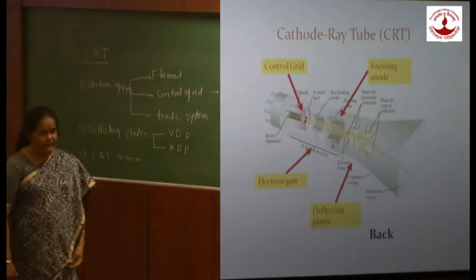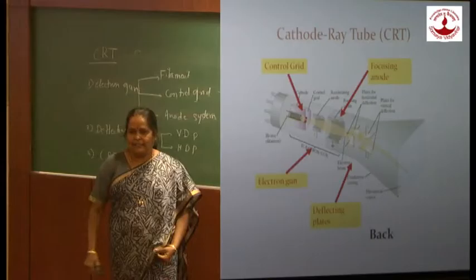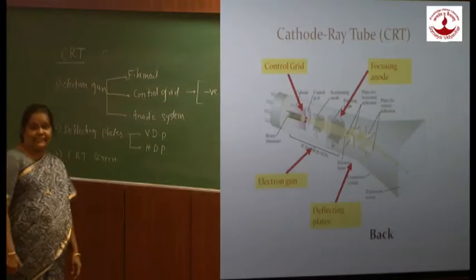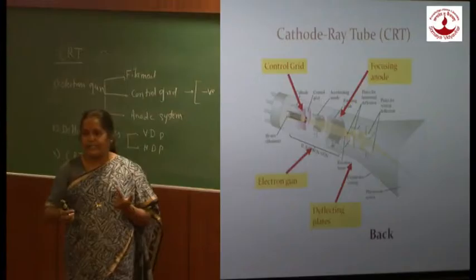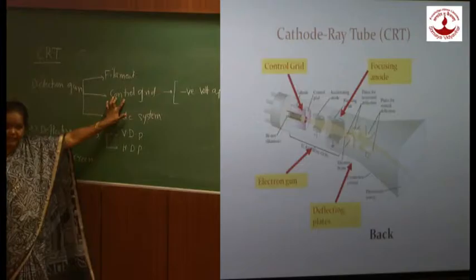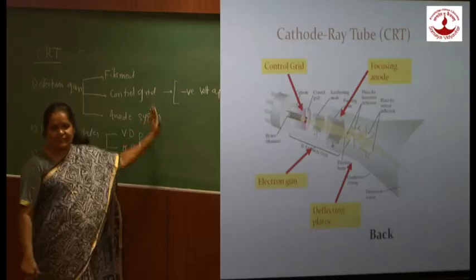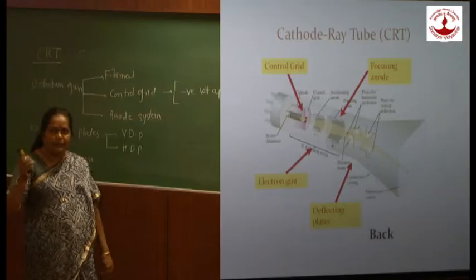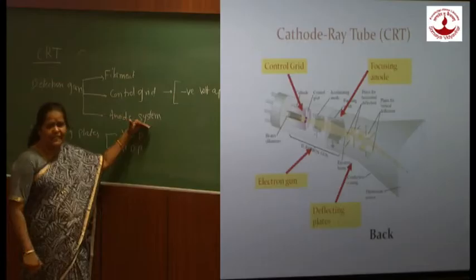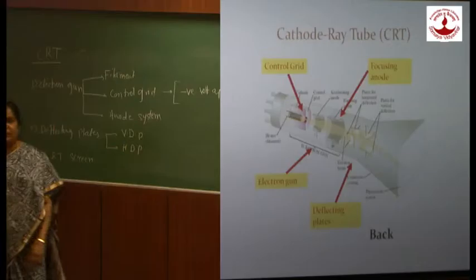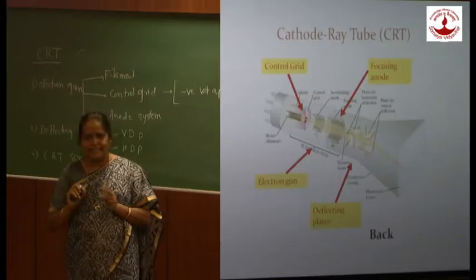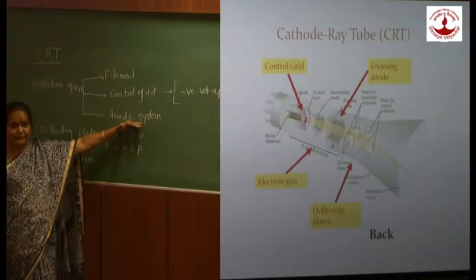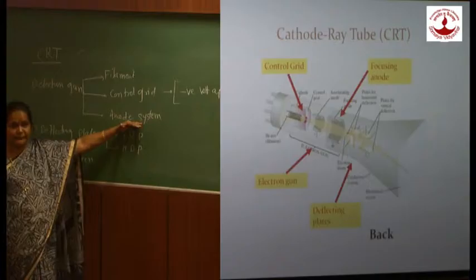We can adjust the brightness of the spot by varying the negative voltage on the control grid. This is done externally by the intensity knob on the CRO front panel. When we adjust the intensity knob, we are adjusting the voltage on the control grid, which changes the number of electrons reaching the screen — either increasing or decreasing the intensity of the beam. The next part is the anode system. There are three types of anodes: pre-accelerating anode, focusing anode, and accelerating anode. These three anodes together form the anode system, and we will study them in detail.